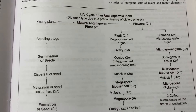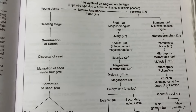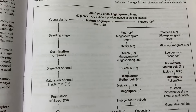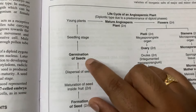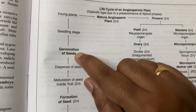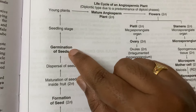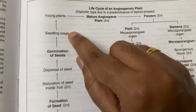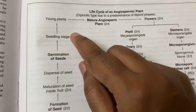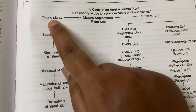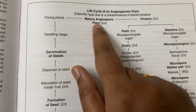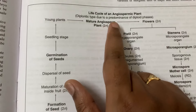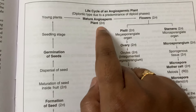Let's see the life cycle of an angiospermic plant. Here they have given a clear flow chart. Let's start with seed germination. Once the seed is germinated, that stage is called the seedling stage. After the seedling stage it develops into a young plant, and the young plant matures into a big plant which we call the mature angiosperm plant, which is diploid in nature.